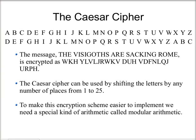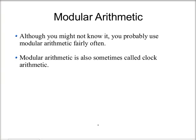To make this encryption scheme and the ones we're going to look at later easier to implement, we need a special kind of arithmetic called modular arithmetic. We've already seen this when we had A mod B to find remainders, where this is the remainder of A divided by B. Although you might not know it, you probably use modular arithmetic fairly often. It's also sometimes called clock arithmetic, because that's one of the most familiar places where you'll see it.